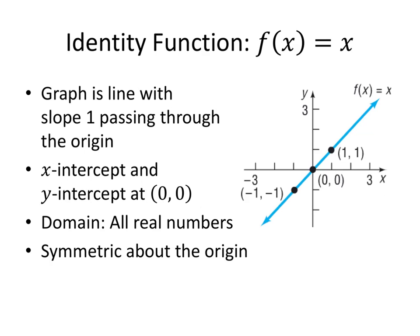Slightly more interesting, but still fairly boring as functions go, is the identity function, f of x equals x. This is the function that has the property that no matter what you plug into it, you get the exact same thing back out. Using our knowledge of linear functions, we know that the graph is going to be a line with slope 1 passing through the origin.